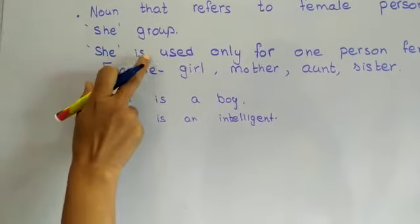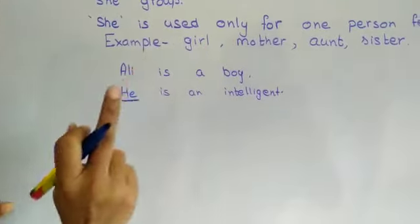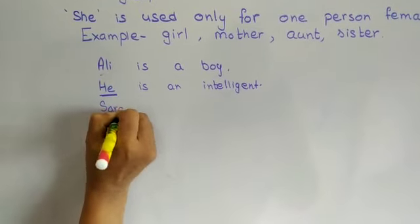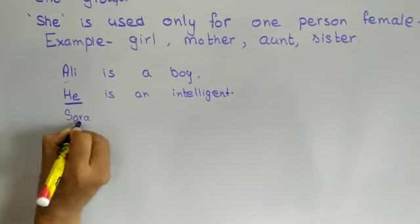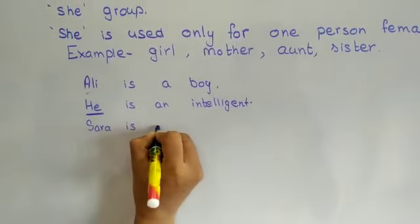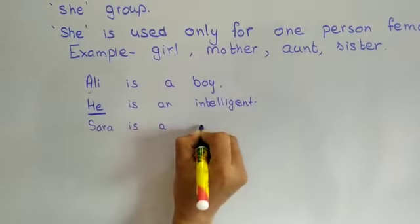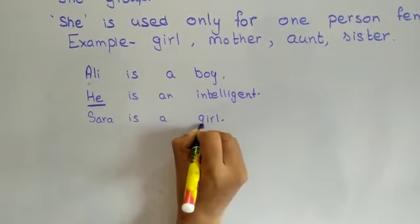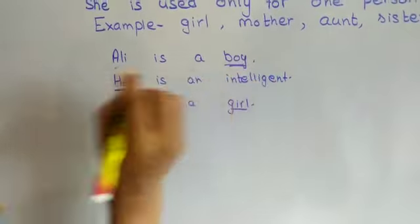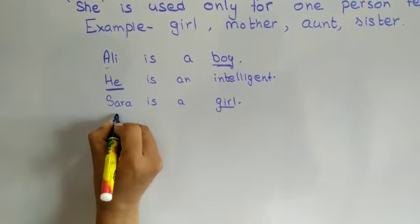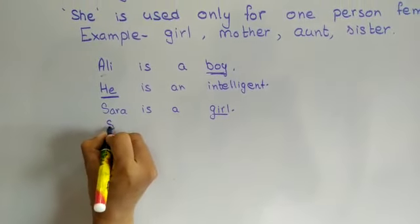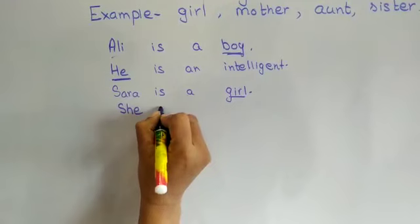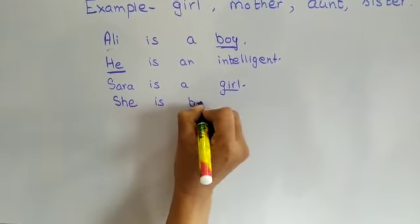For she, it is used only for one person, female. For example, Sarah. Sarah is a girl — she group. So for one person, we write: She is beautiful.